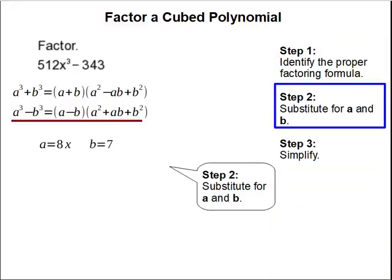Step two, substitute for a and b. First we've got to find what a and b is. a is the cube root of the first term and b is the cube root of the second term.